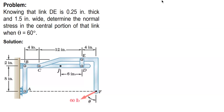In this video, I'm going to solve a sample problem about simple stress. Here's the problem: knowing that link BE is 0.25 inches thick and 1.5 inches wide, determine the normal stress in the central portion of that link when theta is equal to 60 degrees.